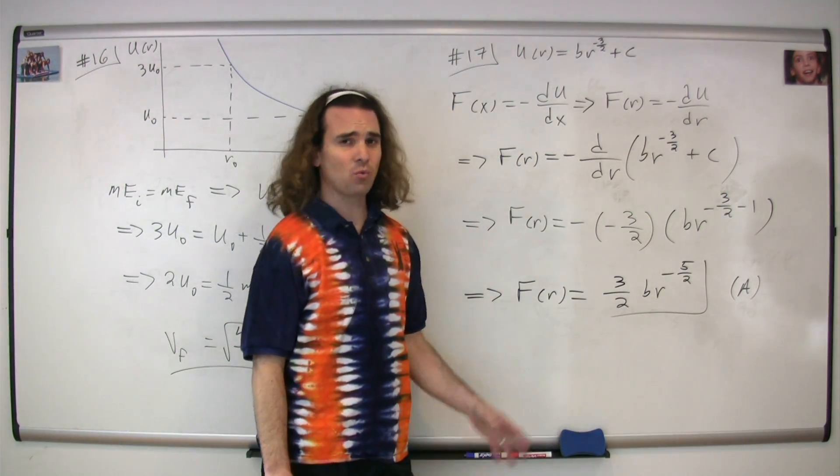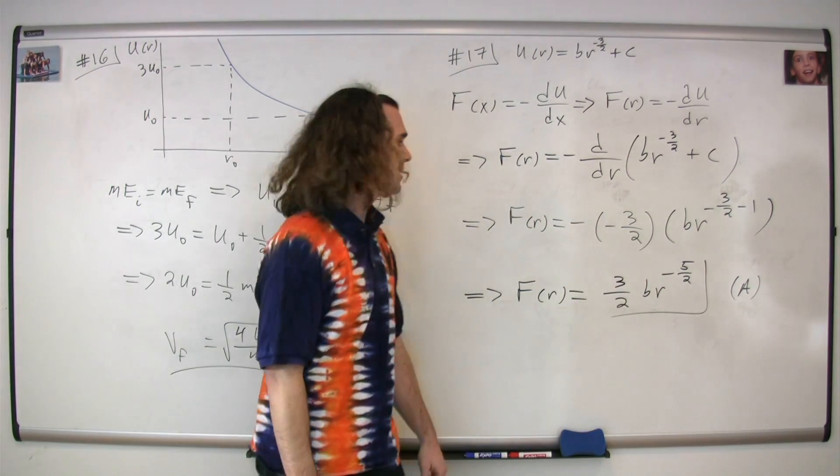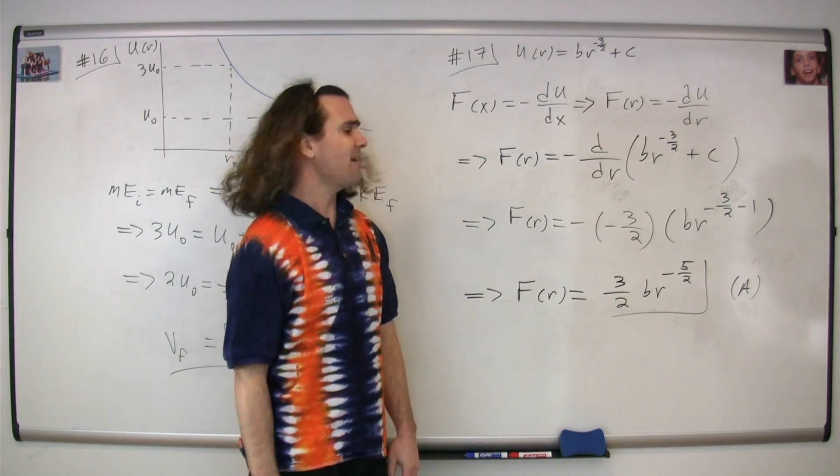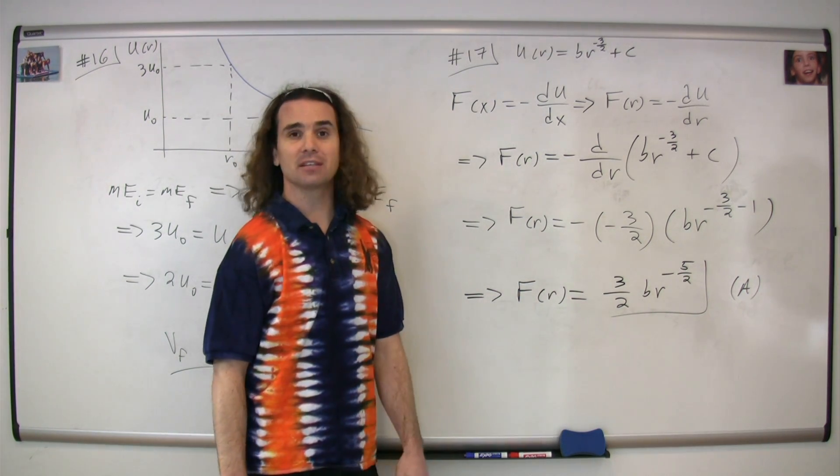I left that as negative 3½ minus one at the beginning there, just to make it more clear, because people tend to make mistakes right there. So we end up with a negative times a negative, which is just positive, so we get 3½ Br to the power of negative 5½. The correct answer is A.